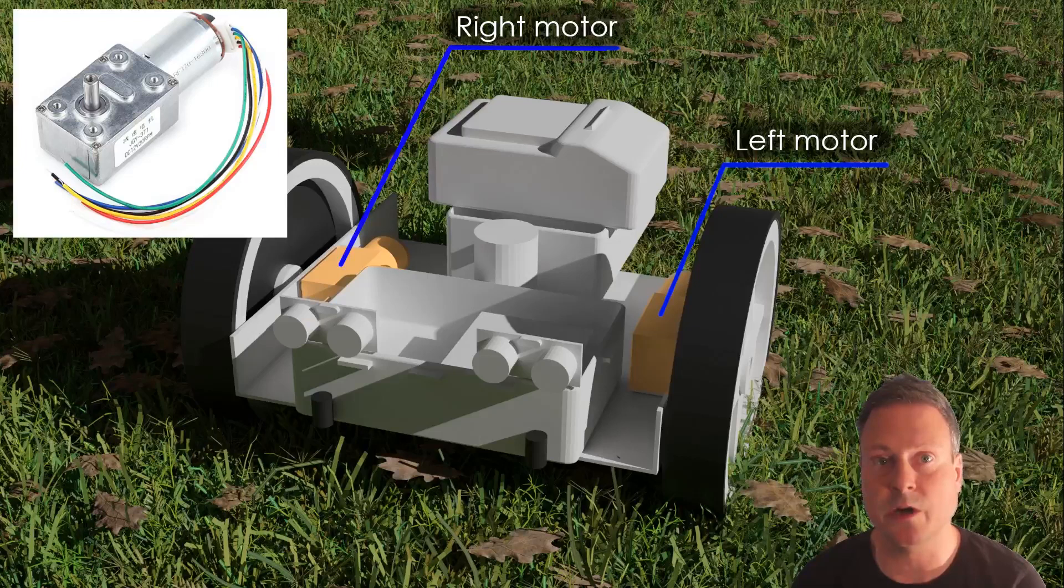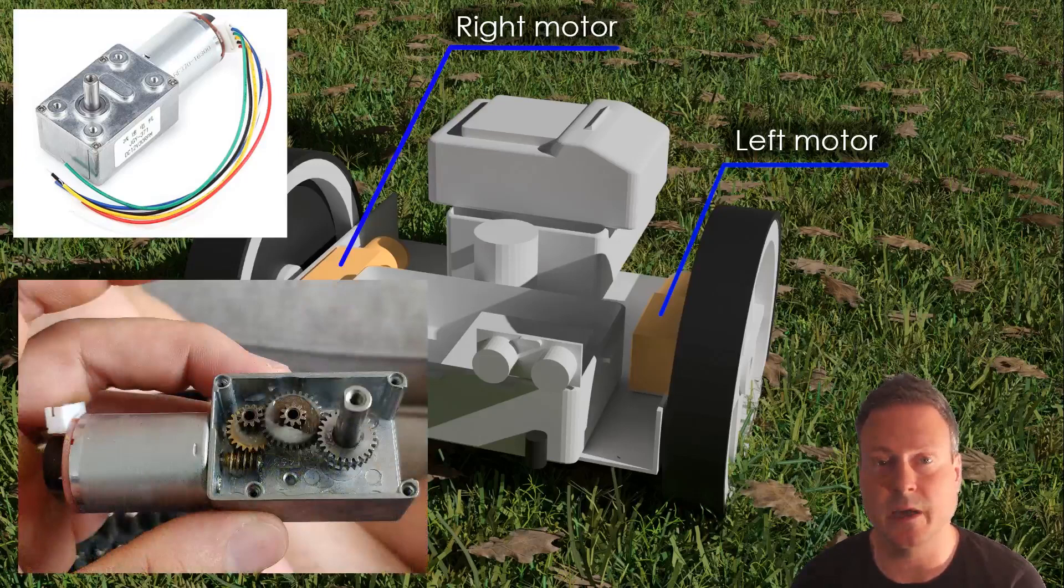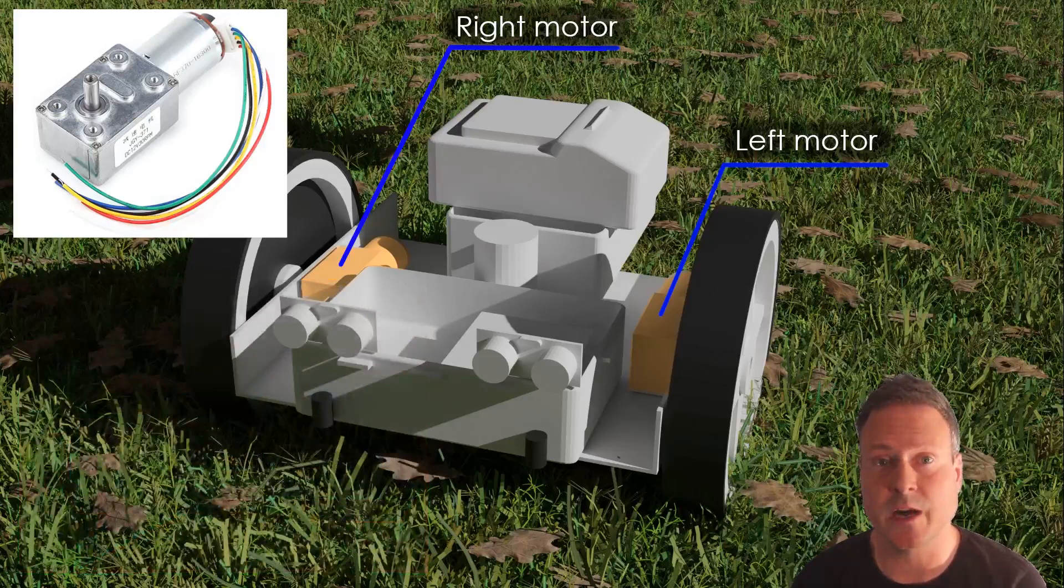The most expensive components are the DC motors that drive the two large front wheels. The reason is that they include a gearbox to get the high torque and low rpm, in this case 30 rpm, and they also include encoders so that the Arduino can track each motor speed individually.